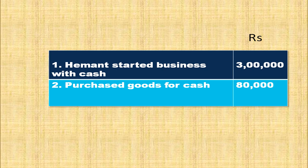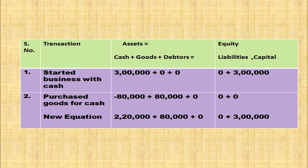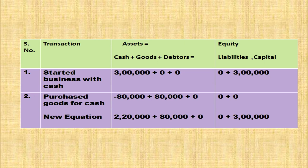Here are more transactions. First: Heyman started business with cash rupees 3,00,000 — cash increases and capital increases, so cash column 3,00,000 and capital 3,00,000. Second: purchase goods for cash rupees 80,000 — goods column plus 80,000, cash column minus 80,000. New accounting equation: cash 2,20,000 + goods 80,000 = liability 0 + capital 3,00,000.